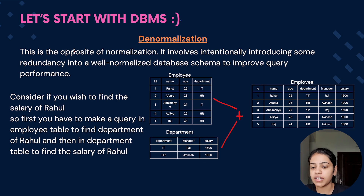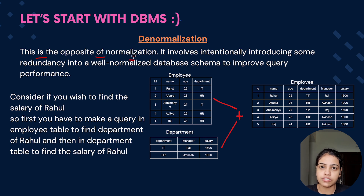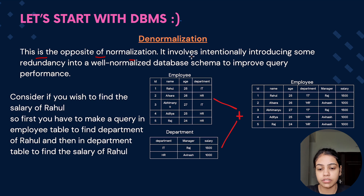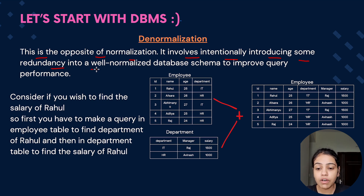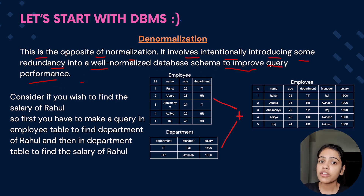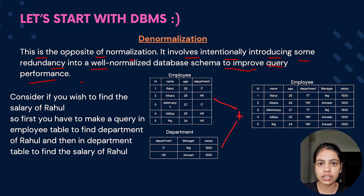So what is denormalization? This is the opposite of normalization. Whatever things we do in normalization, we just do the opposite in denormalization. It involves intentionally introducing some redundancy into a well-normalized database schema to improve query performance. In normalization, what we used to do is we used to reduce the data redundancy which is present in our table.